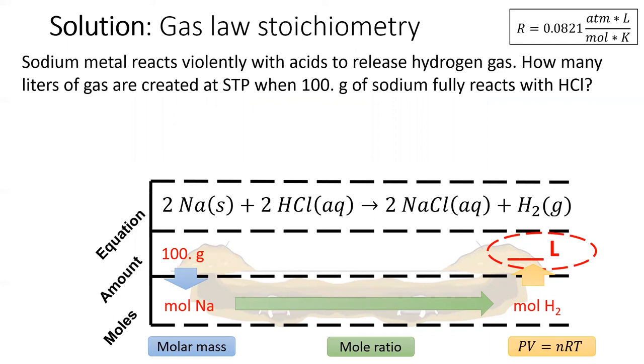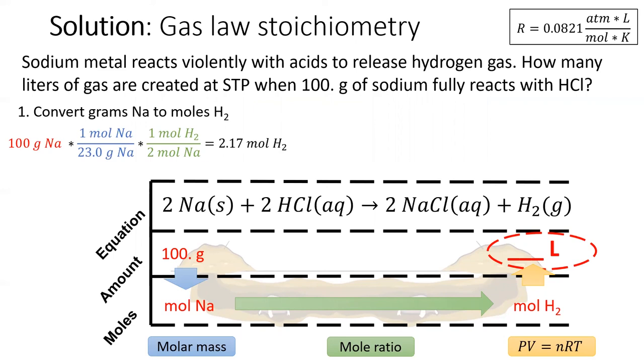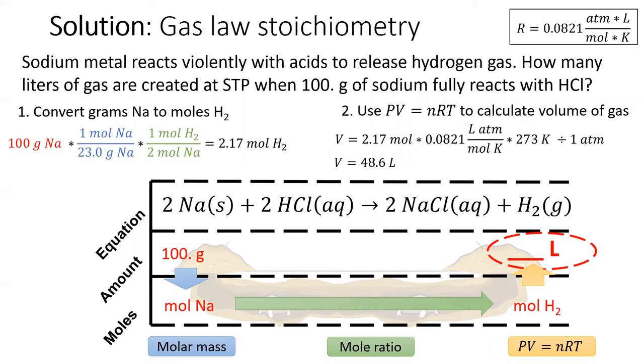Here's the solution. First, we will convert grams of sodium into moles of hydrogen using our well-practiced pattern, molar mass and then mole ratio. Here's where things get different though. We'll plug moles of hydrogen into a PV equals nRT equation and solve for the volume, which is 48.6 liters in this problem.